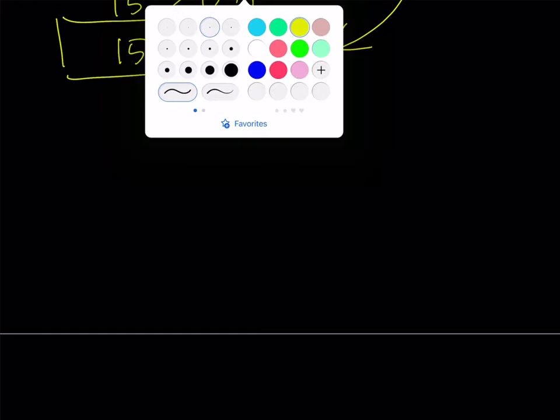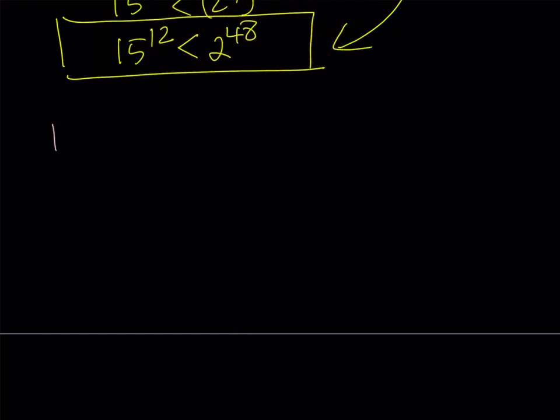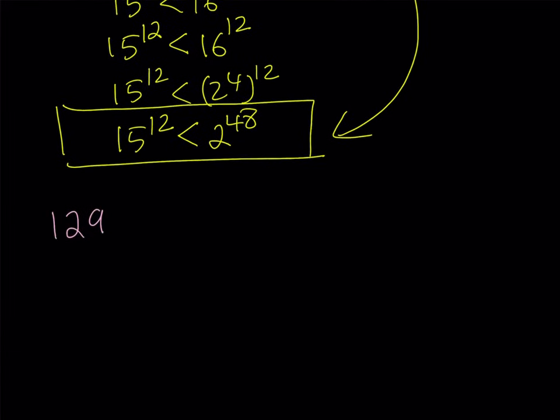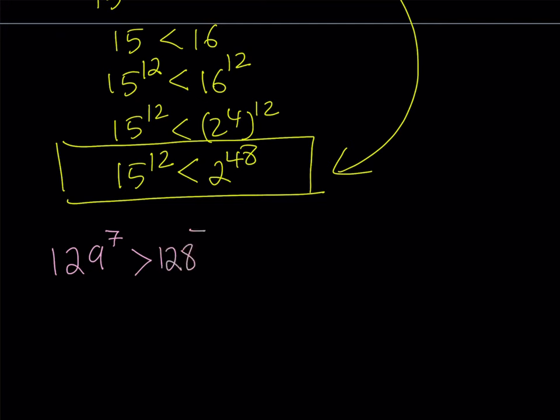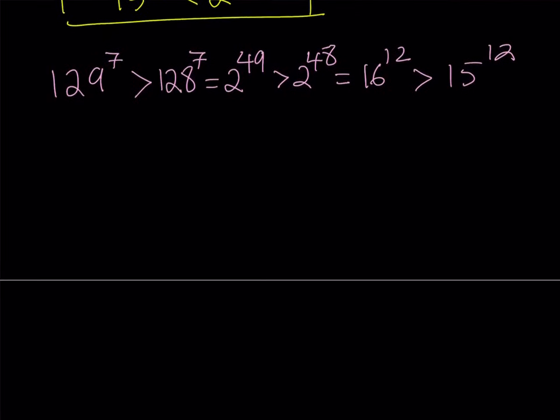Here's what I'm going to do. I'm going to start off with my original number, 129 to the power of 7. This is greater than 128 to the 7th power, which is equal to 2 to the power of 49. And as you know, 2 to the power of 49 is always greater than 2 to the power of 48, which can be written as 2 to the 4th to the power of 12, which is 16 to the power of 12. And 16 to the power of 12, of course, is greater than 15 to the power of 12. What does this give us? This tells us that from the transitive property of inequalities, we can consider this as a chain of inequalities. We can safely say that 129 to the 7th power is greater than 15 to the power of 12.